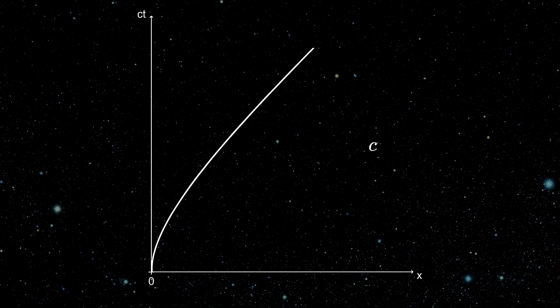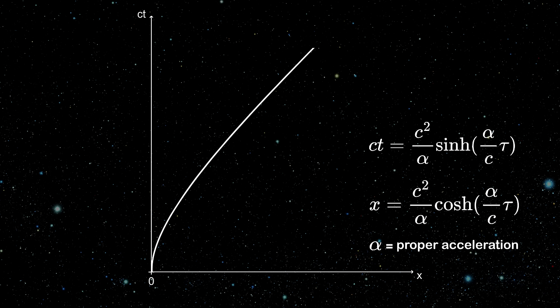It is a hyperbola given by these parametric equations. This hyperbola has an asymptotic line that is exactly at 45 degrees. This basically means that the observer can only asymptotically approach the light but never cross.